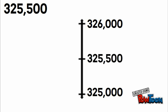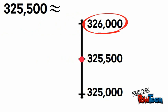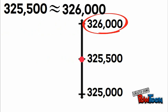Our number is actually the midpoint — three hundred twenty-five thousand five hundred. Anytime it's the midpoint or above, we always round up. So rounding to the nearest thousand, this equals three hundred twenty-six thousand.